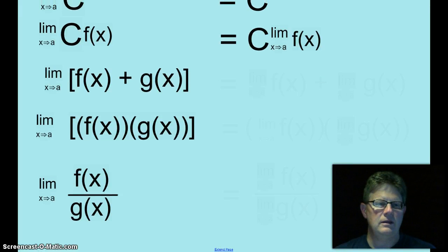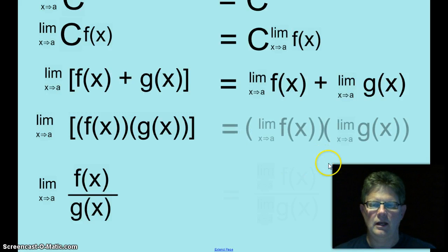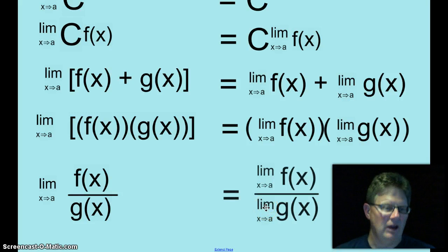How about taking the limit of f of x plus g of x as x approaches a? You can take the limit of the first function and then add it to the limit of the second function to get your limit. Same thing will work for products. If you are taking the limit of two products, you can take the limit of each factor and then multiply those two limits together to get a new limit.